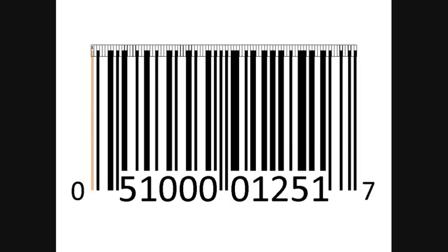In this example, the computer begins reading the columns from left to right. The first column reflects virtually no light, so it considers that a one. The next column reflects a lot of light, so it considers that a zero. The third column reflects virtually no light, so it also considers that a one. The fourth, fifth, and sixth columns all reflect a lot of light, so they are all considered zeros.